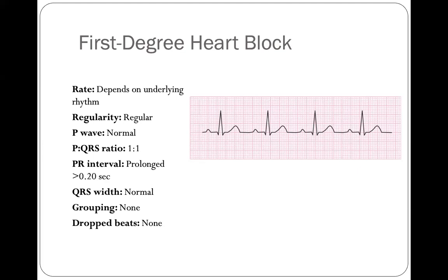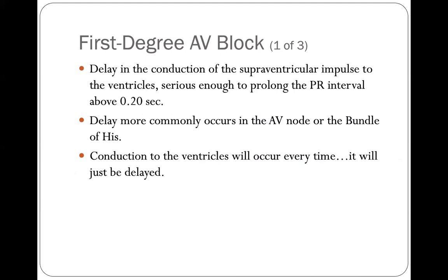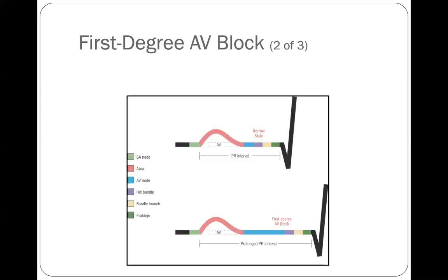The delay in conduction of the atrial impulse is long enough to increase the PR interval to greater than 0.2 seconds, and it is consistent throughout. The delay most commonly occurs in the AV node or bundle of His. Conduction to the ventricles occurs every single time — every P-wave has a QRS — but it is delayed to the same level each time. You might describe it as sinus bradycardia with first degree heart block.